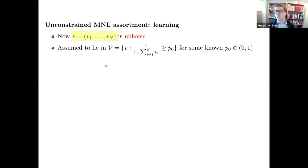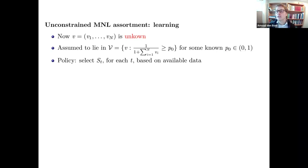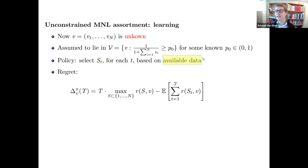We make a technical assumption — a lower bound on the no-purchase probability — which is actually quite natural since in practice the probability of not purchasing is high. A policy maps any possible dataset of past assortments and corresponding purchases to a next assortment to offer. Each assortment can only depend on what you have already observed.